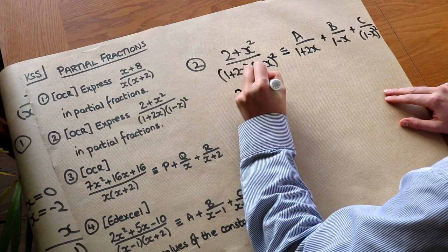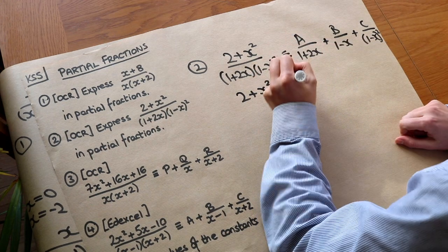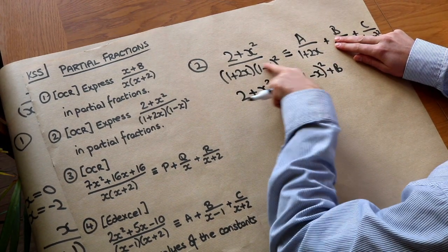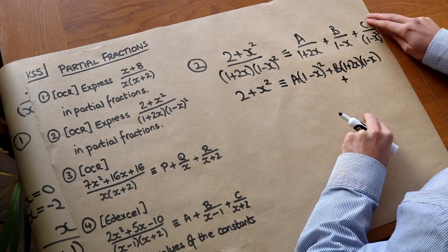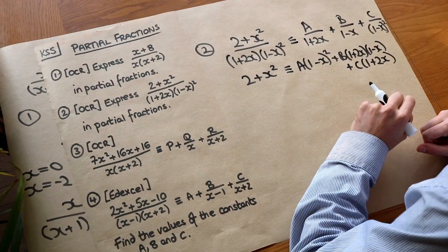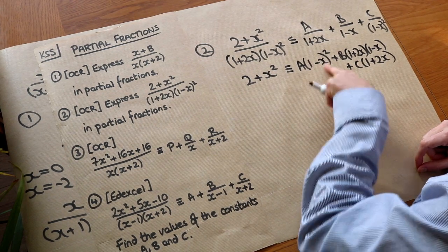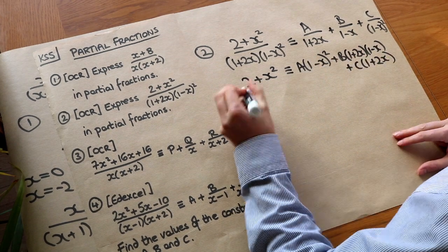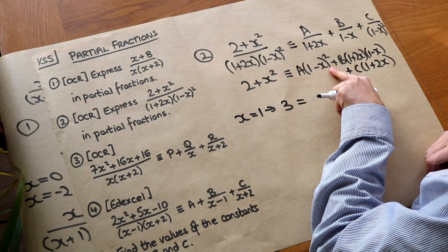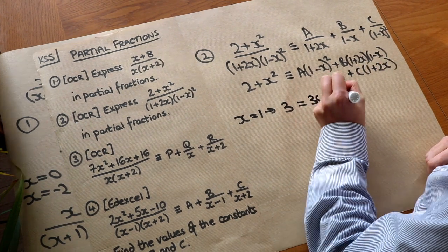So on the left-hand side we just have 2+x². On the right-hand side: multiplying by (1+2x) gets rid of that denominator but we still multiply by (1−x)², giving A(1−x)². Plus B: multiplying by (1−x) gets rid of that denominator, but we still multiply by (1−x) and (1+2x), giving B(1−x)(1+2x). Then C gets multiplied by (1+2x). Now let's sub in values. If x=1, that zeroes out both the A and B terms. So 2+1 = 3 = C(1+2) = 3C, meaning C = 1.